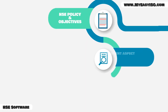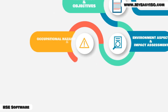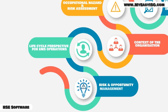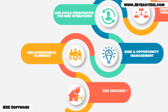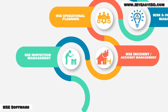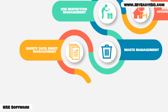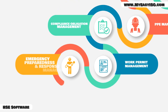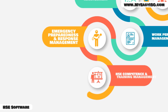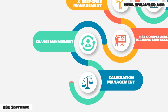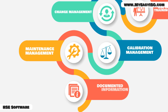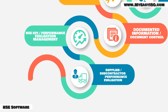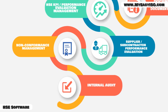Modules include: HSE Policy and Objectives, Environment Aspect and Impact Assessment, Occupational Hazard and Risk Assessment, Context of the Organization, Lifecycle Perspective for EMS, Operations Risk and Opportunity Management, HSE Operational Planning, HSE Incident and Accident Management, HSE Inspection Management, Waste Management, Safety Data Sheet Management, PPE Management, Compliance Obligation Management, Work Permit Management, Emergency Preparedness and Response Management, HSE Competence and Training Management, Change Management, Calibration Management, Maintenance Management, Documented Information and Document Control, HSE KPI Performance Evaluation Management, Supplier and Subcontractor Performance Evaluation, Non-Conformance Management, Internal Audit, and Management Review.